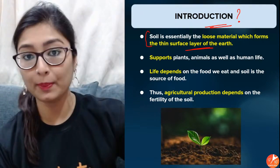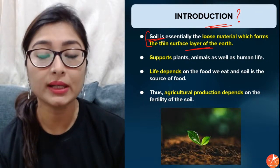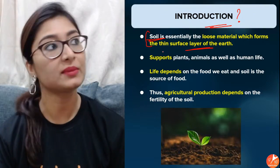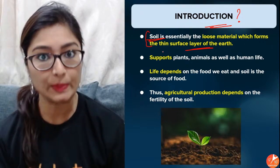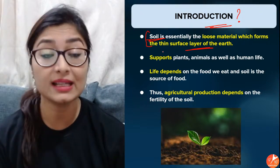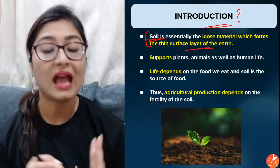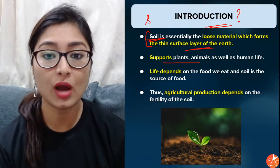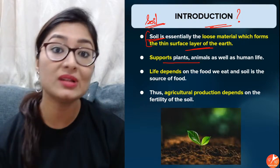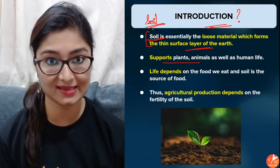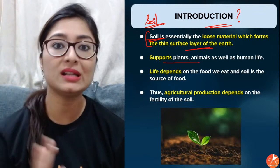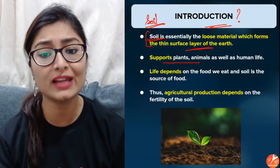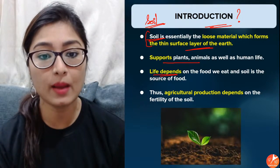Soil is the very top layer, the powdered material. Now what makes it so important that we are doing an entire chapter on it? It supports plants, it supports animals, it supports human life directly and indirectly in so many ways. You cannot imagine life without soil — plants will not grow, and humans and animals will have nothing to feed on. Soil forms the base of life.